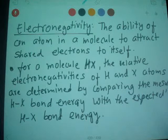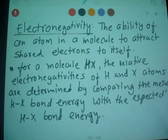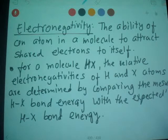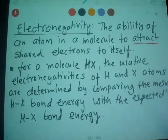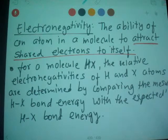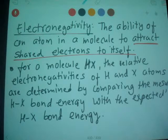When you look at the periodic table, electronegativity relates to shared electrons and how strongly an atom attracts them in a molecule. The electronegativity range is from 4.0 for fluorine to 0.7 for cesium. I'm going to give you an example, but let me go to the next slide.